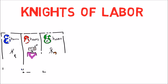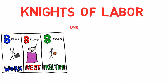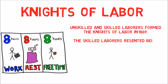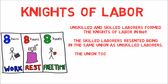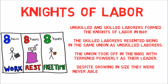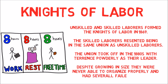The Knights of Labor was formed in 1869 by unskilled and skilled laborers. The skilled laborers resented being in the same union as unskilled workers. The union grew in the 1880s with Terence Powderly as their leader, but despite growing in size, they were never able to organize properly and had several failed strikes.